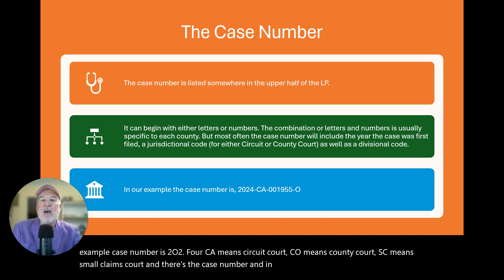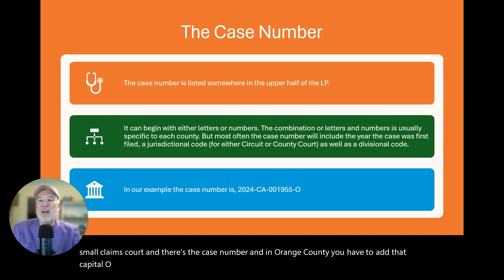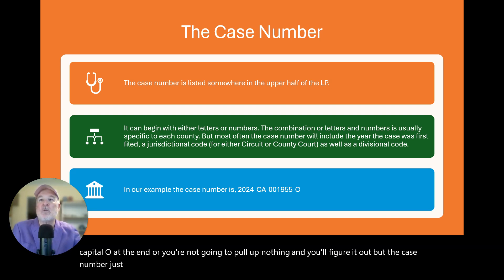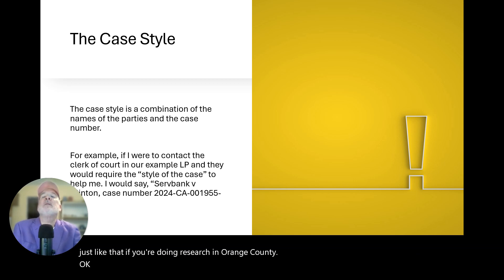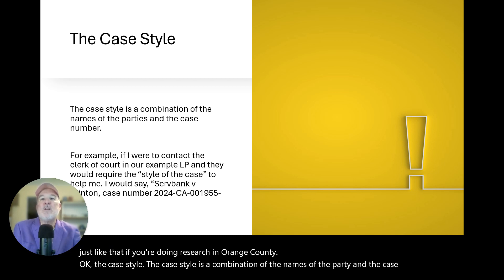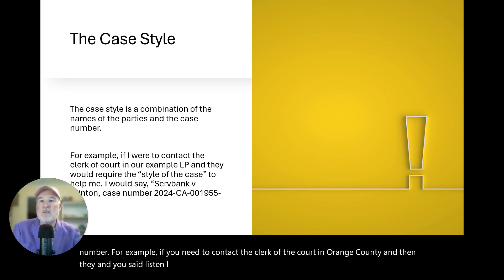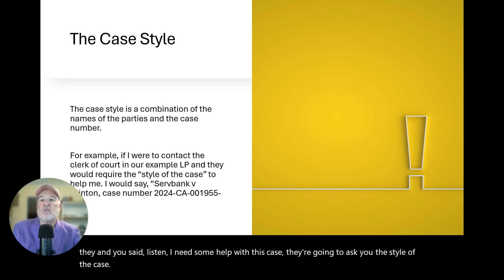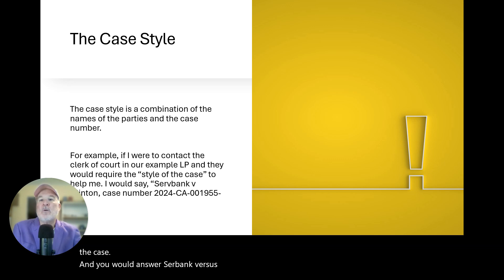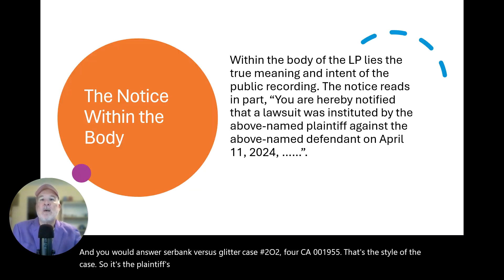In Orange County you have to add that capital O at the end or you're not going to pull up anything. The case style is a combination of the names of the parties and the case number. For example, if you need to contact the clerk of the court in Orange County, they're going to ask you the style of the case. You would answer: Servbank versus Glinton, case number 2024 CA 001955. So it's the plaintiff's name, the defendant's name, and the case number.